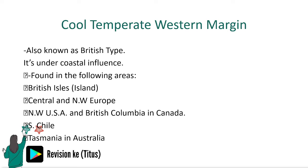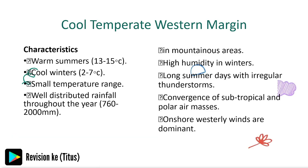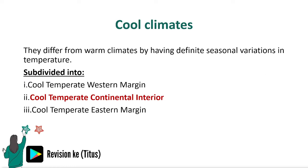The cool temperate western margin, also known as the British type, is under coastal influence. Let's proceed to the cool temperate continental interior. Remember, you can pause the video or get the Geography app where the points are laid out clearly.